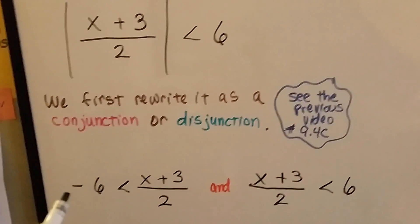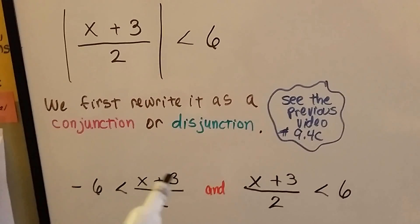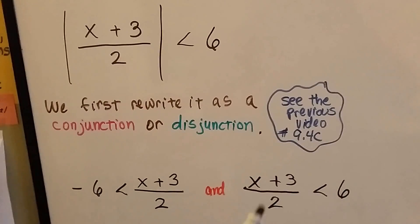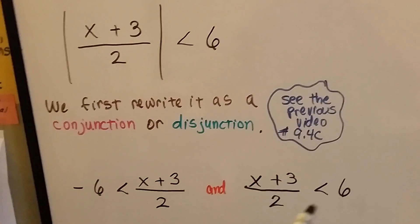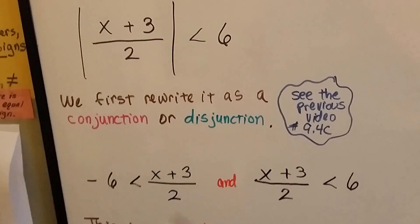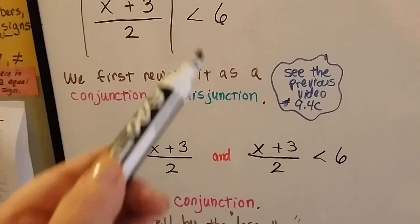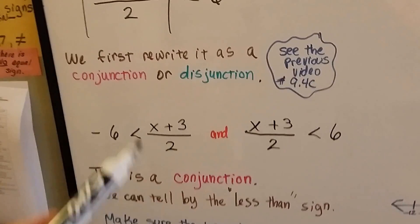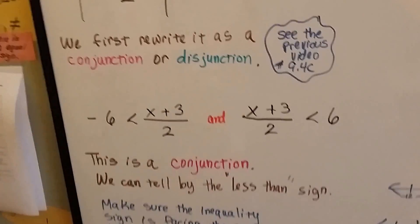So now we've got negative 6 is less than x plus 3 over 2, and x plus 3 over 2 is less than a positive 6. See? So this is a conjunction. We can tell by that less than sign.